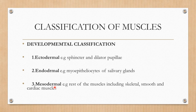Most of the muscles are mesodermal in origin, but there are exceptions. A few muscles originate from the ectodermal germ layer — the examples are sphincter and dilator pupilli muscles in the eyeball. The muscles derived from endoderm are the myoepitheliocytes of the salivary glands, which are responsible for expulsion of glandular secretions.